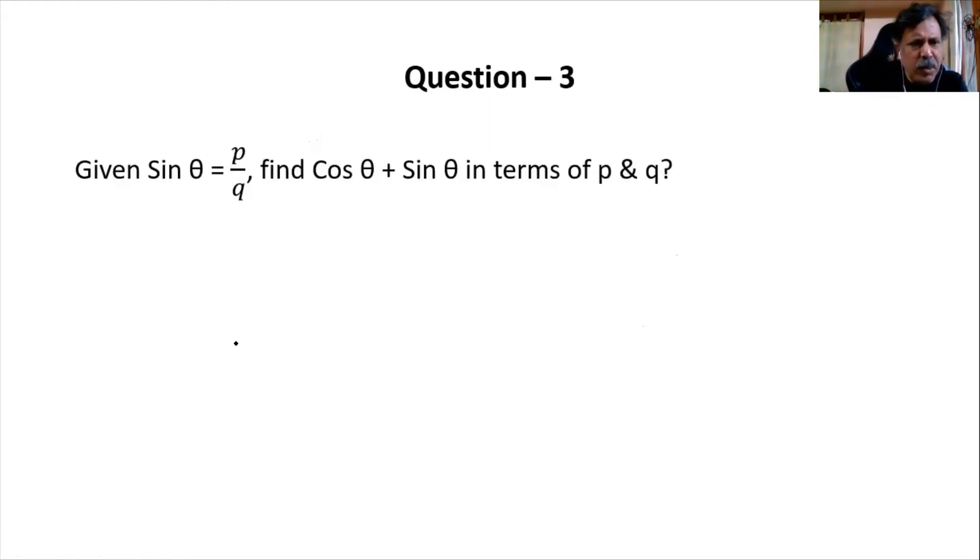Given sin θ equals p by q, find cos θ plus sin θ in terms of p and q. Again, we'll have to draw a right-angled triangle, so let me draw it here itself.